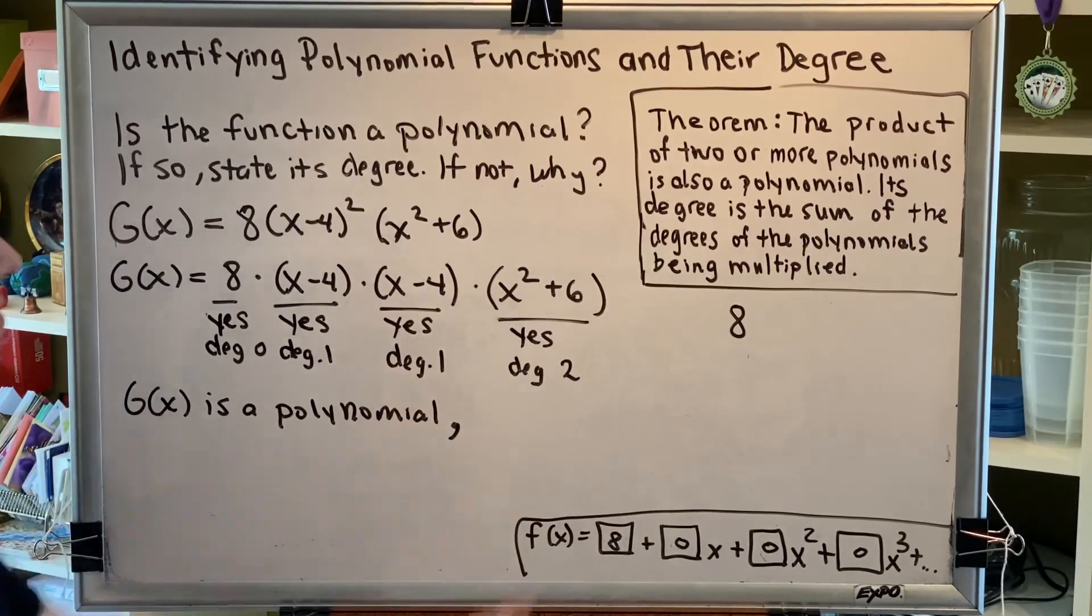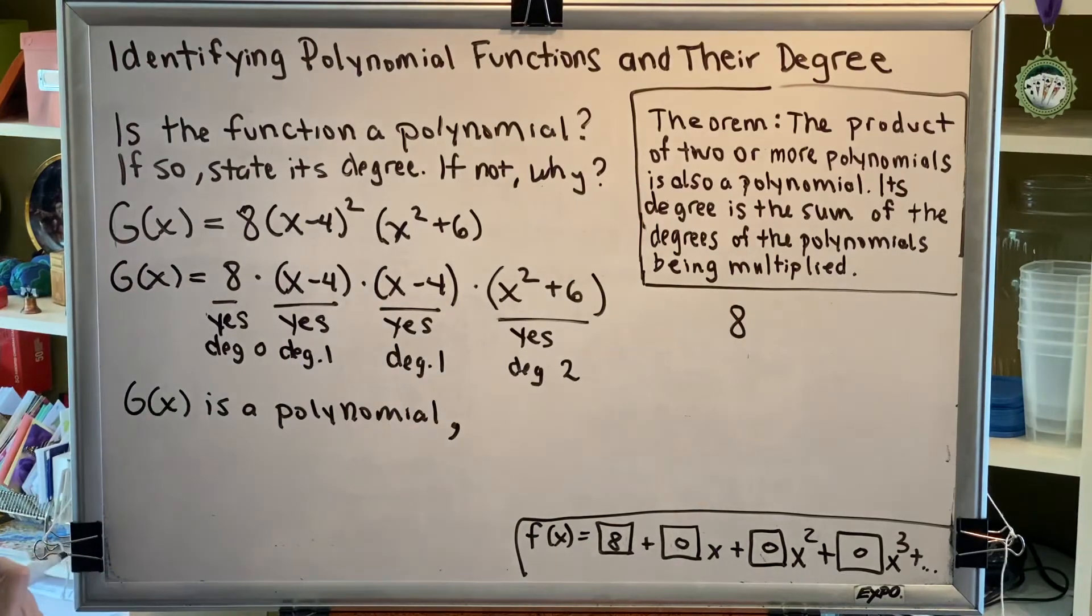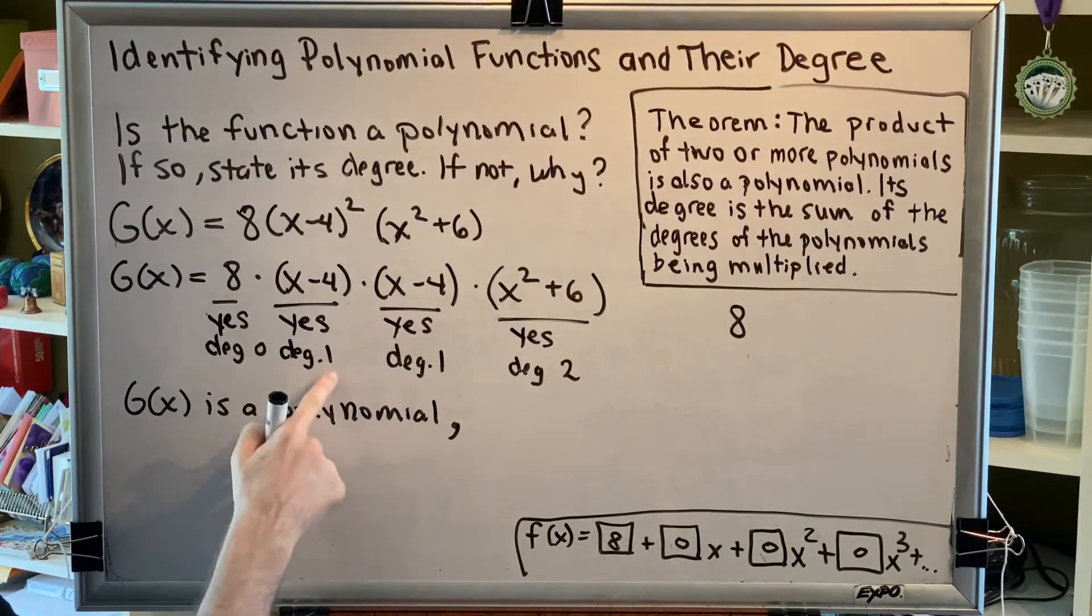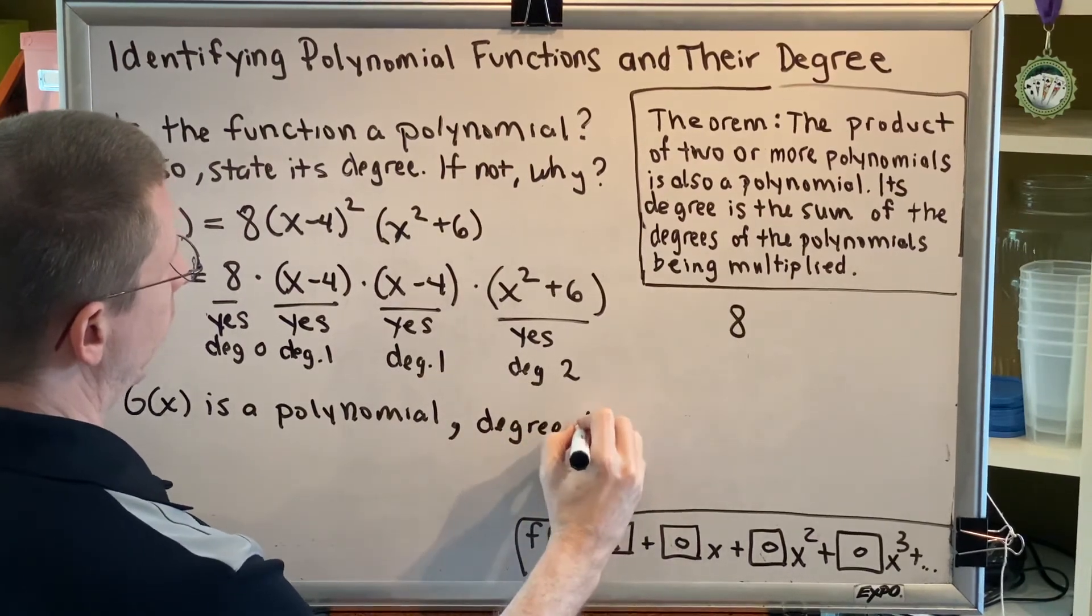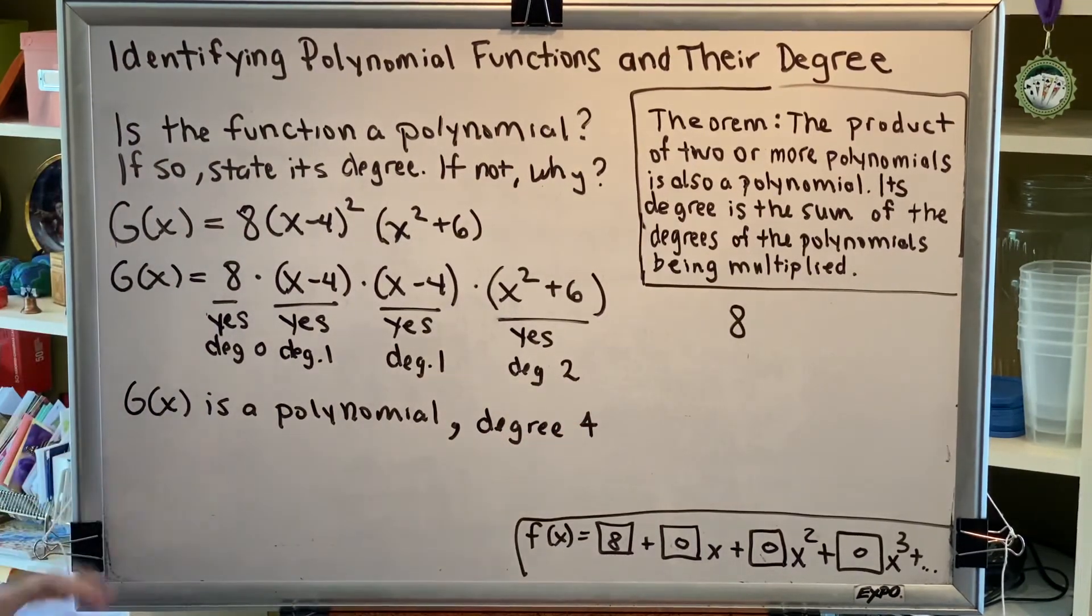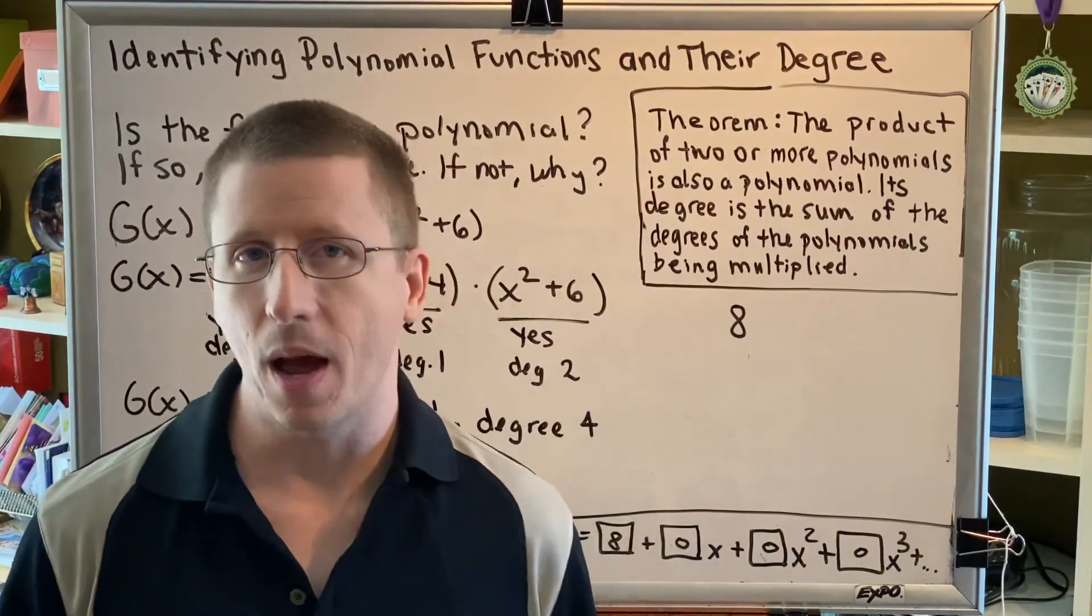And its degree is the sum of the degrees of the individual little polynomials that are being multiplied. So I add 0 plus 1 plus 1 plus 2, and I get 4. g of x is a polynomial, and its degree is 4. Remember this theorem. It's a big time saver.